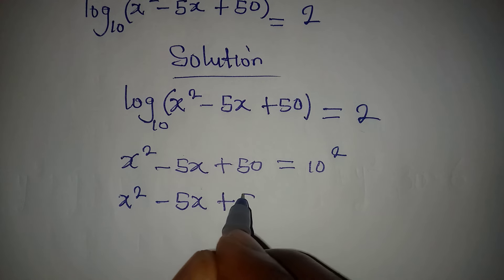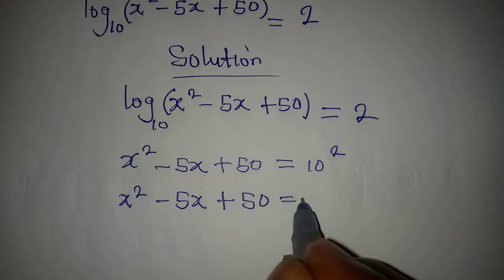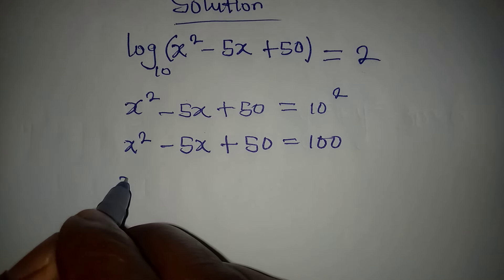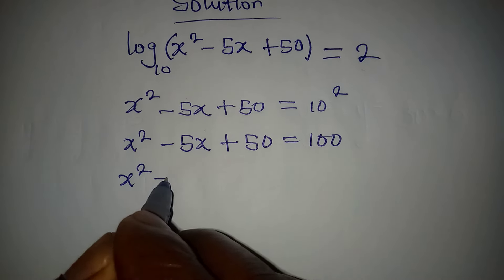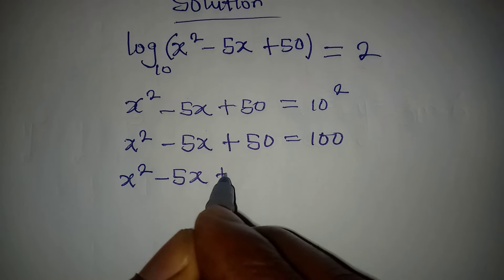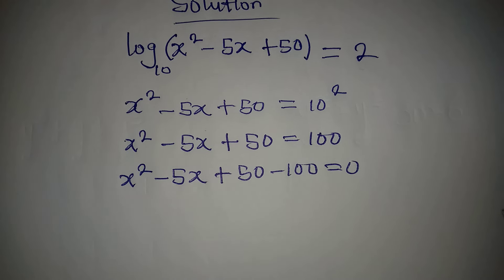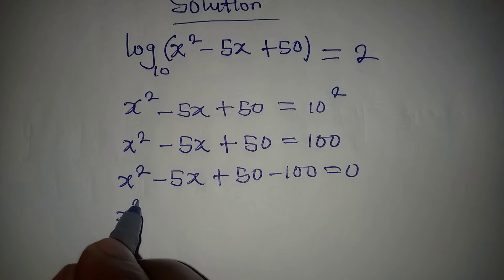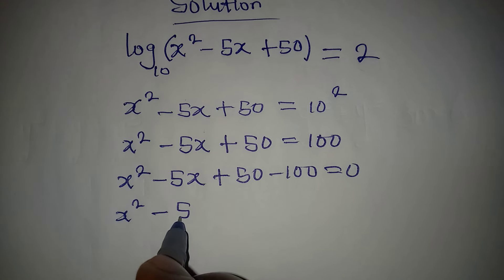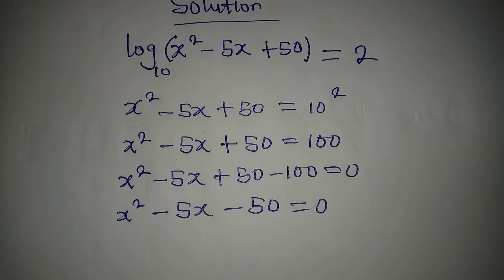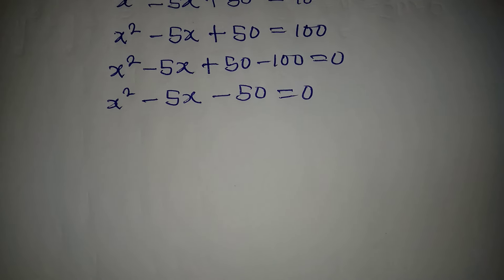From here we can see x² - 5x + 50 is equal to 100. The next thing is bringing 100 to the left-hand side, and we will have x² - 5x + 50 - 100 equal to zero, which gives us x² - 5x - 50 = 0.